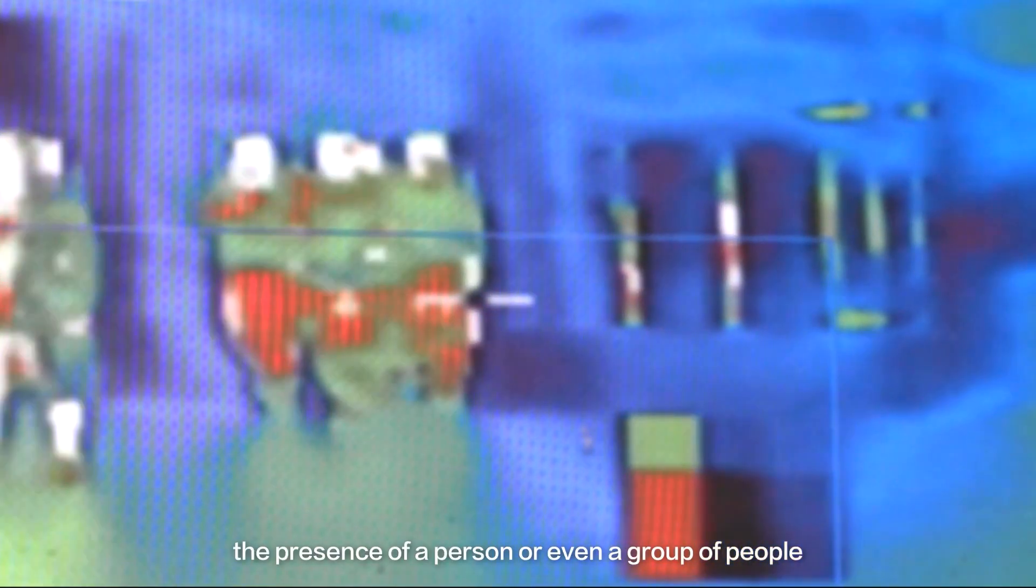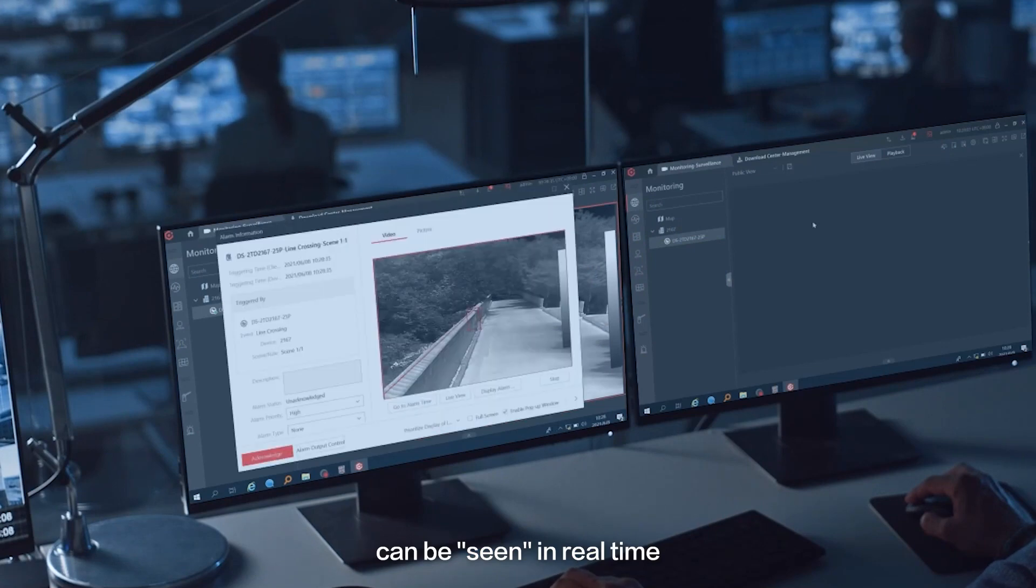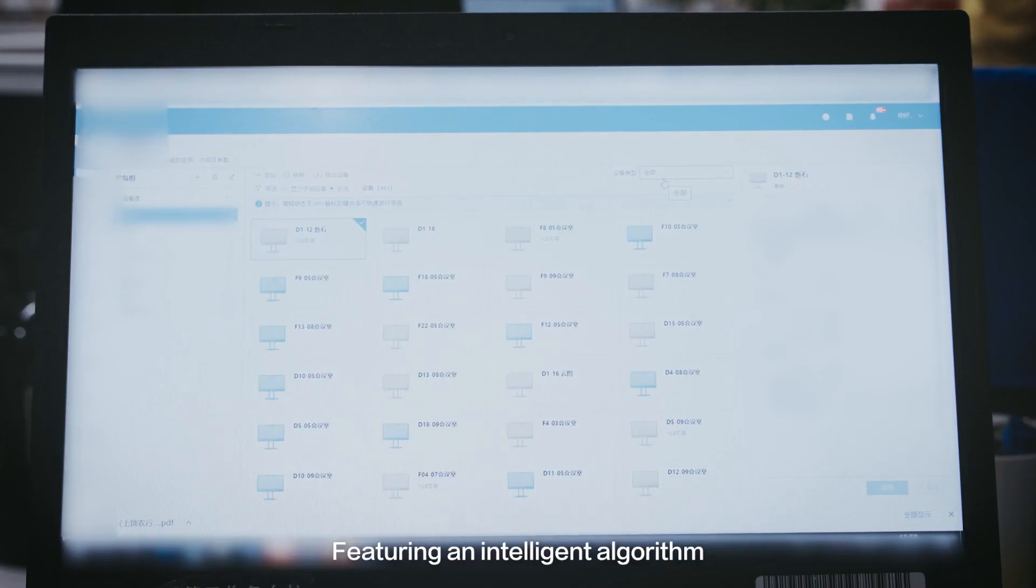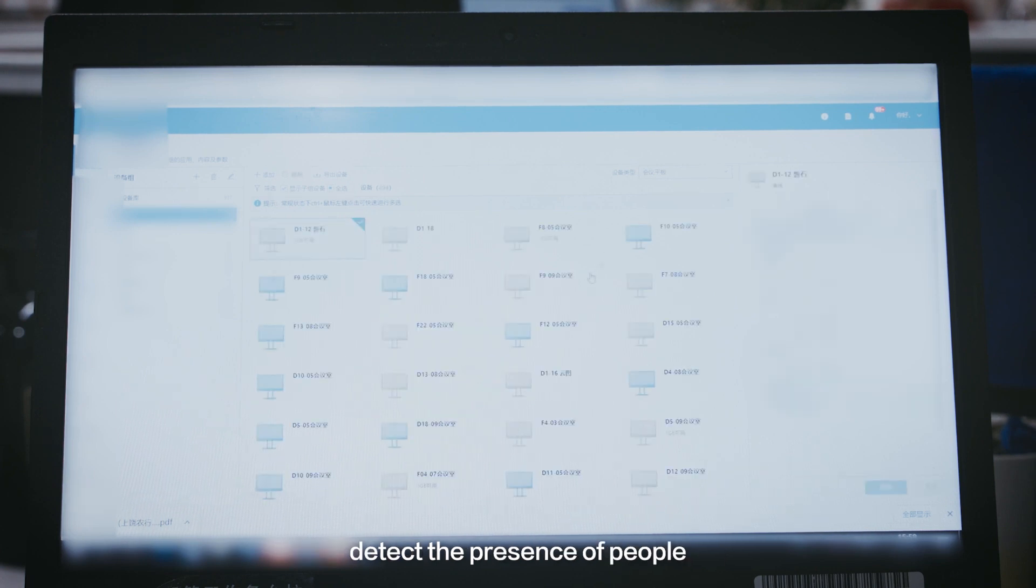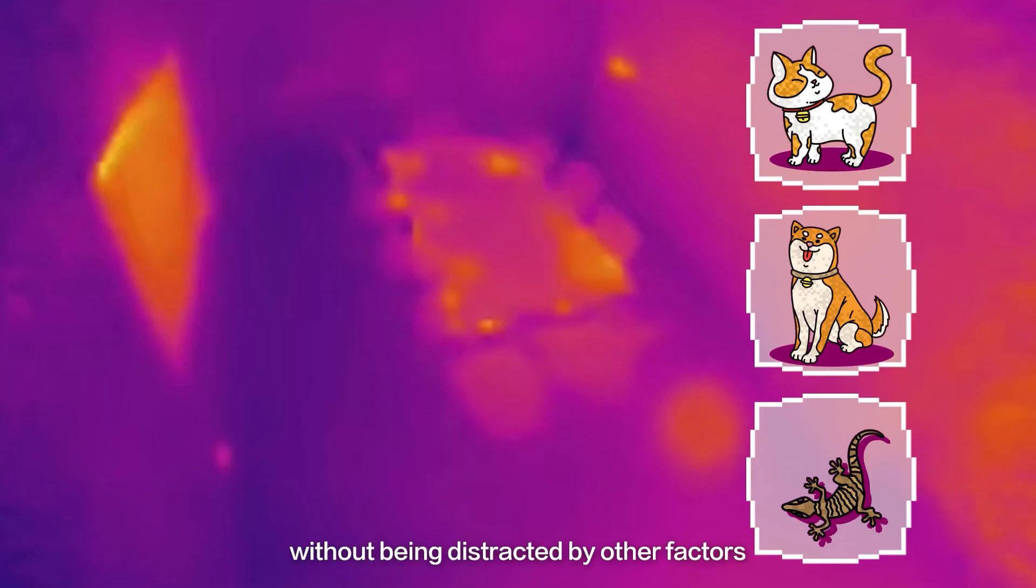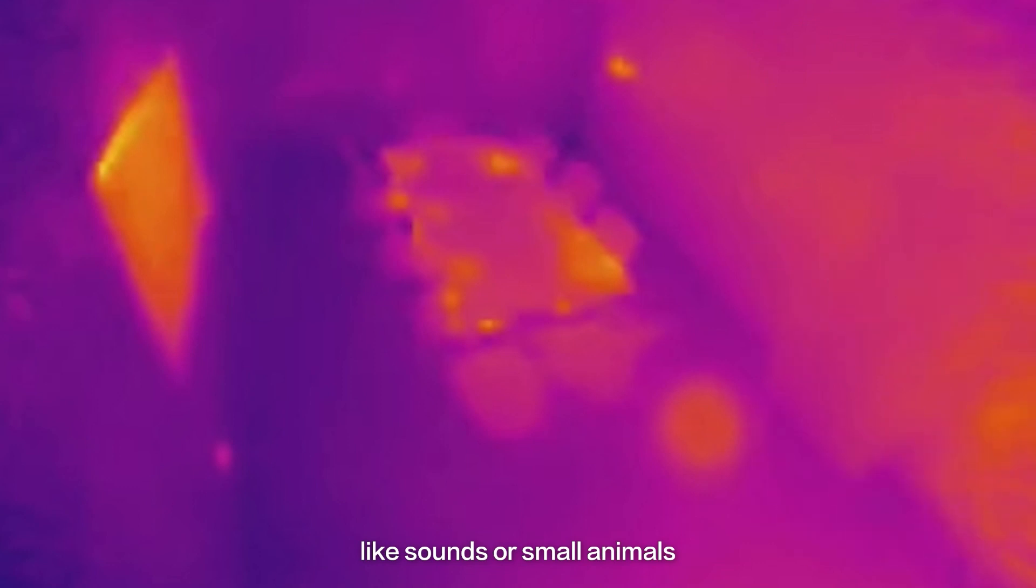This means in a conference room, the presence of a person or even a group of people can be seen in real time. Featuring an intelligent algorithm, these outdoor thermal security devices detect the presence of people without being distracted by other factors like sounds or small animals.